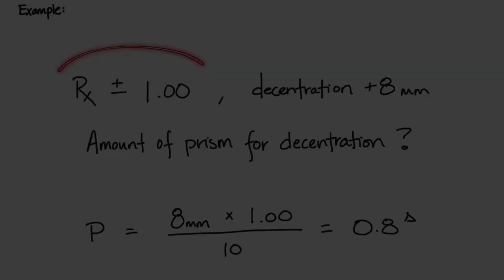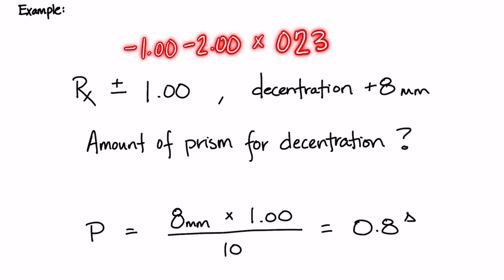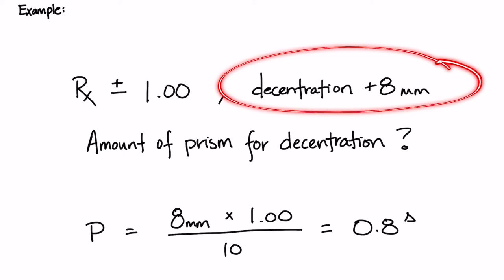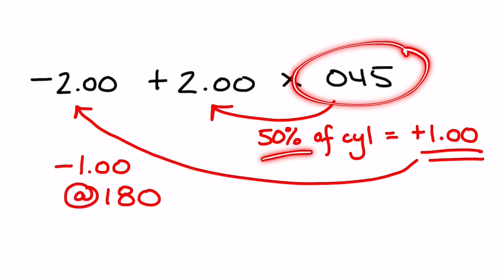For horizontal decentration like we're doing in this example, we would want to find the power in the 180 meridian. You can use tricks you've learned about prescription powers and how to determine the power in a particular meridian, or you can use the oblique meridian formula to straight calculate it.